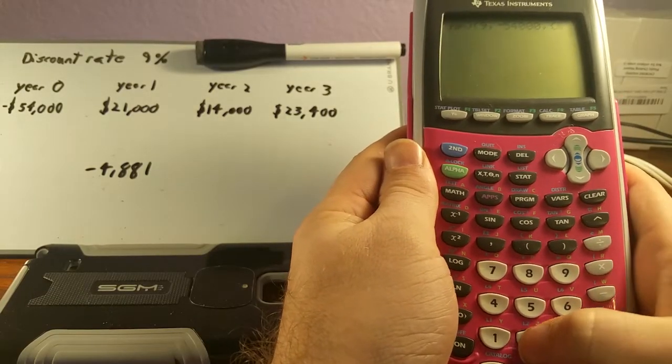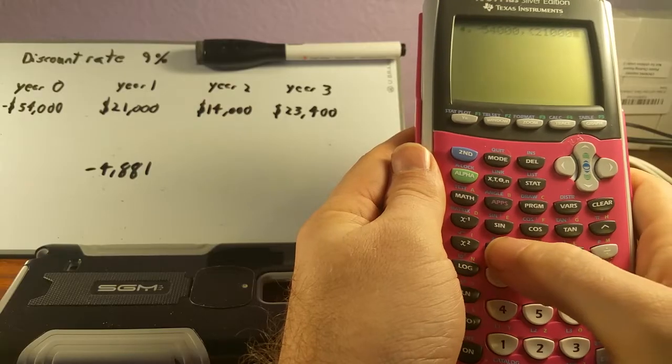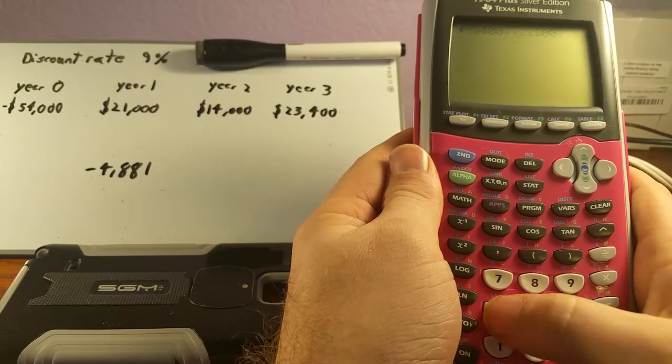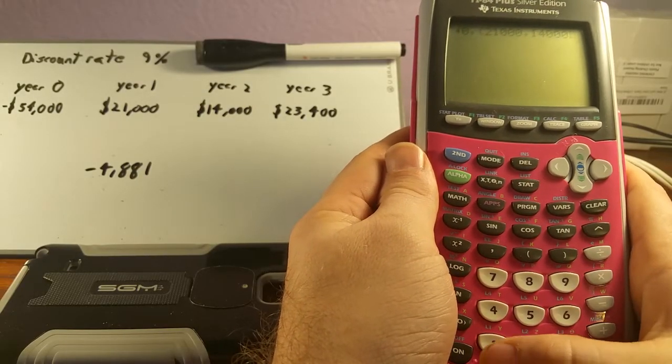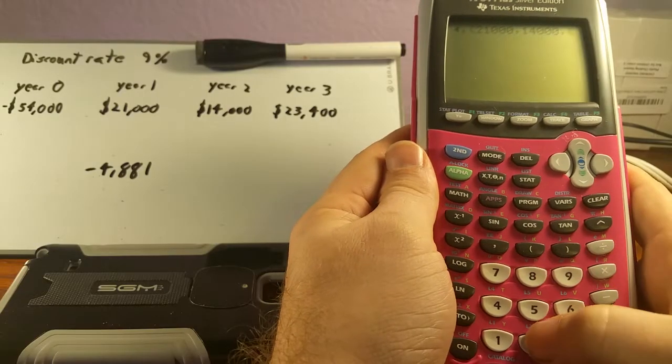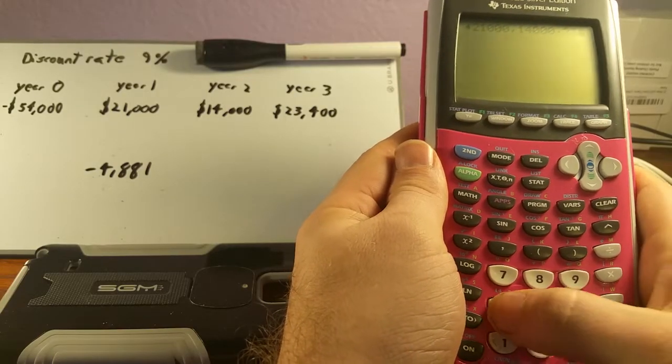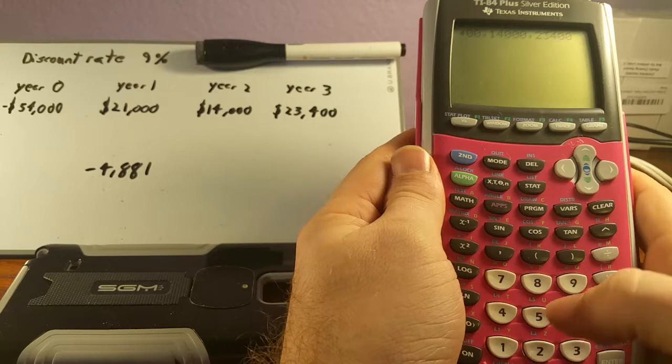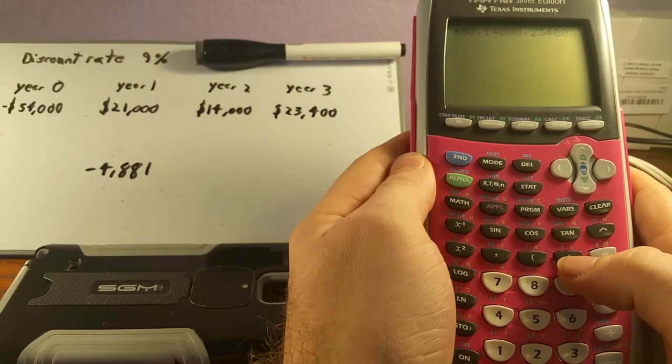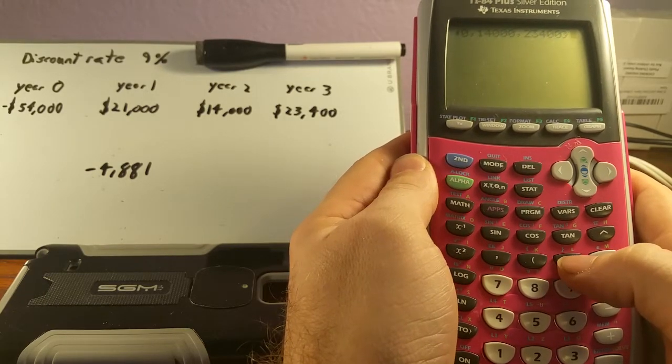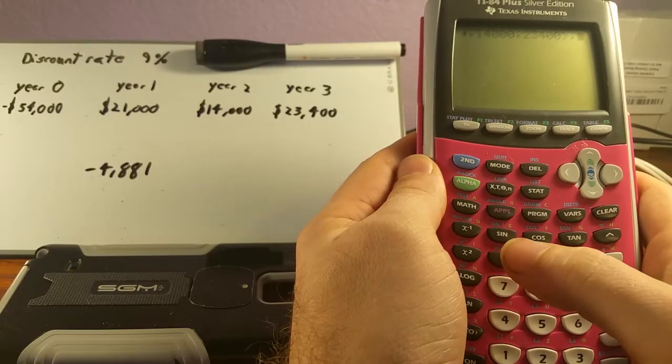So we're going to go with 21,000, separate by comma, 14,000, comma, 23,400, and then we'll 2nd and close the curly braces and separate by comma once again.